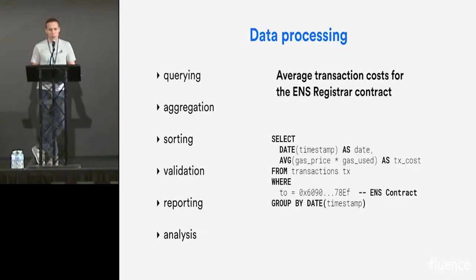So what's data processing? If you go to Wikipedia and look at how data processing is defined, it tells you that you can aggregate data, sort data, validate data, build reports, and some people might argue that making SQL queries is also some sort of data processing. Here you can see an example of average transaction costs for the Ethereum Name Service contracts. It's a fairly simple SQL thing.